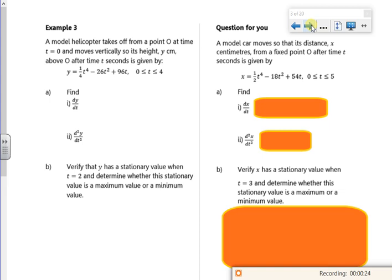So finding dy/dt. So look, y on the left, t on the right. So dy/dt, it's good. So I've got a quarter times by 4t cubed, so that's just going to be t cubed. I've got minus 26, sorry about 3, minus 26 times 2t, so that's minus 52t, plus 96.